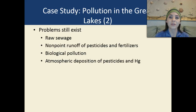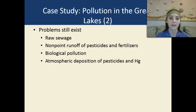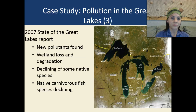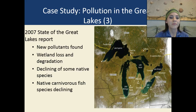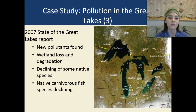But problems still exist. There was still raw sewage being put in, non-point sources of runoff with pesticides and fertilizers going into the lake, other types of biological pollution, and atmospheric deposition of pesticides and mercury. In 2007, the State of the Great Lakes Report found new pollutants being released into the lakes, wetland loss and degradation, a decline of native plant and animal species, and a decline of native carnivorous fish species.